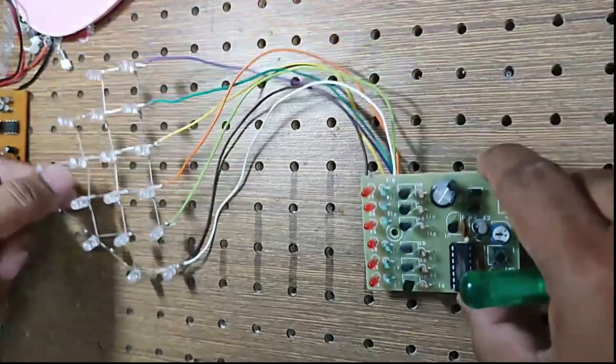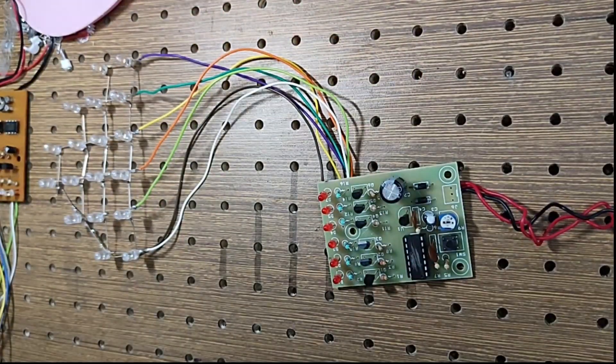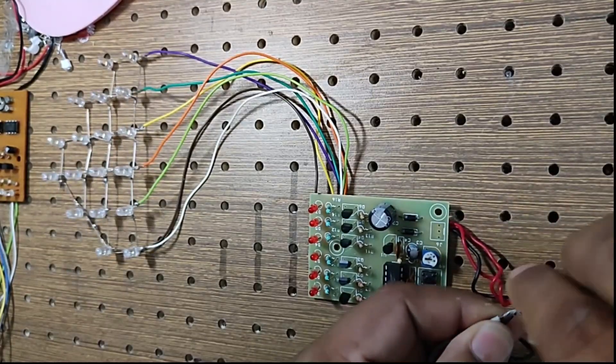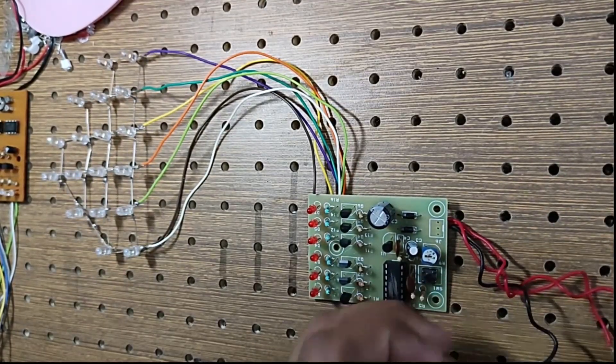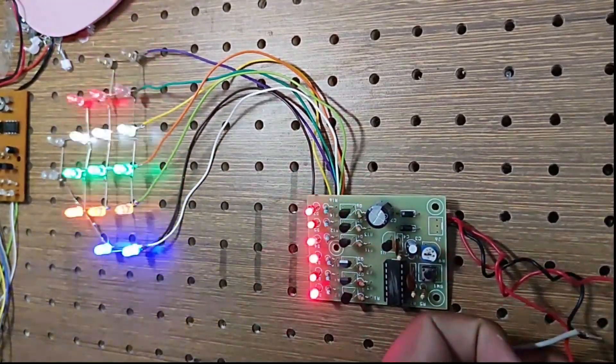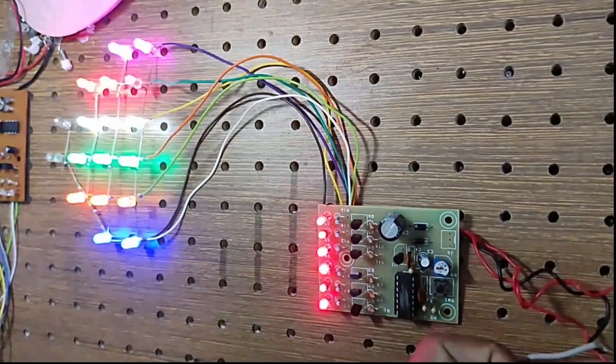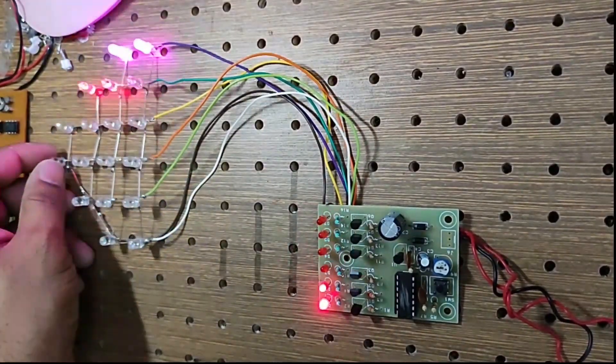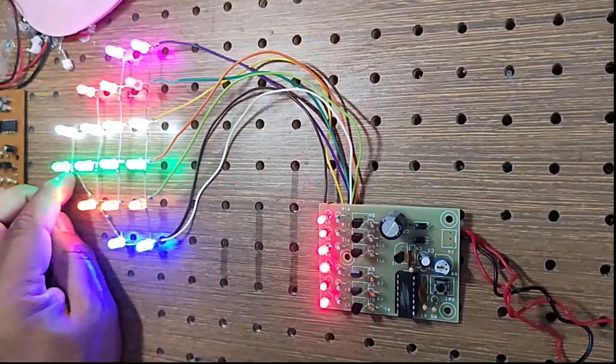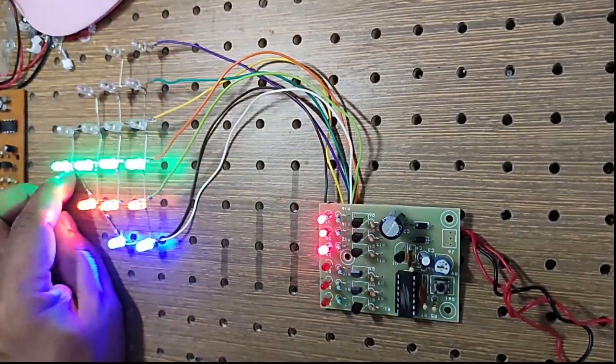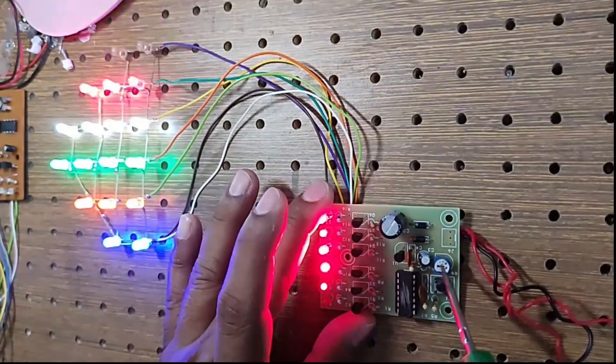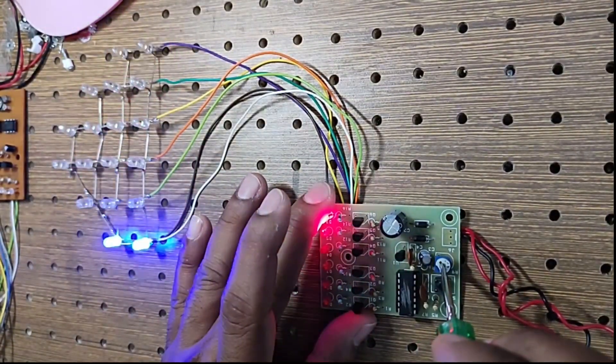Let us give the power. This is your ground wire and plus VCC. You can give 9 to 12 volts. My friends, you can see now this circuit has 13 different modes. This is the speed control knob.